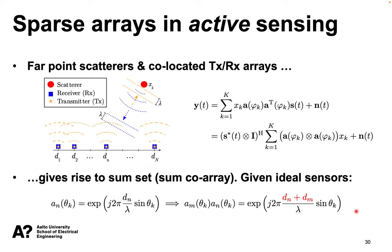A similar thing happens in active sensing where we also have control over the transmission. Here, instead of the difference set, we have the sum set consisting of the pairwise sums of the transmit-receive sensor position pairs. Importantly, in active sensing we don't need to compute second-order statistics to realize this so-called sum co-array.